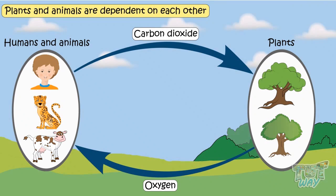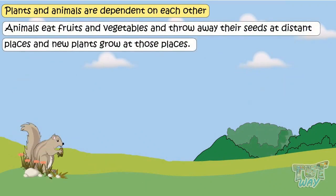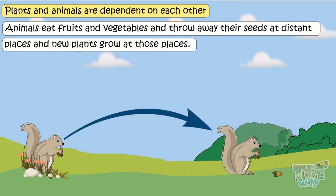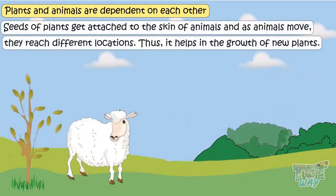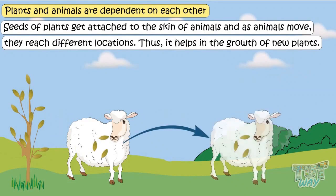Also, animals help to spread the seeds of plants and trees. As animals eat fruits and vegetables and throw away their seeds at distant places, new plants grow at those places. Also, seeds of plants get attached to the skin of animals, and as these animals move, seeds reach different locations, and thus it helps in the growth of new plants.